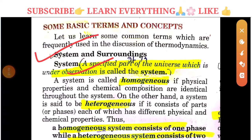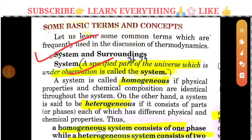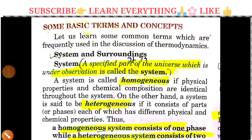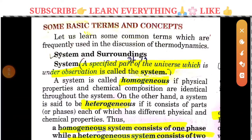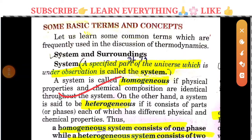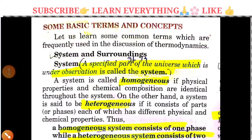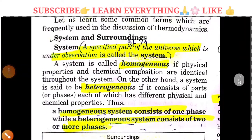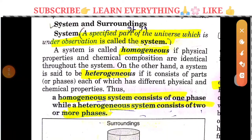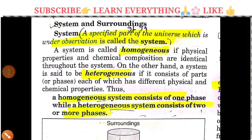The other thing is surrounding. We have a specified part of the universe which is under observation. A homogeneous system has identical physical and chemical properties throughout the whole system. Then we have a heterogeneous system. A homogeneous system consists of one phase, while a heterogeneous system consists of more than one phase.